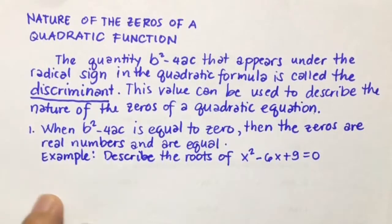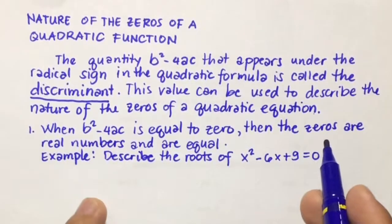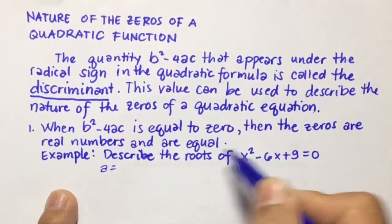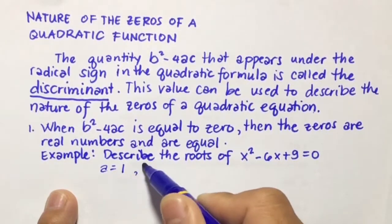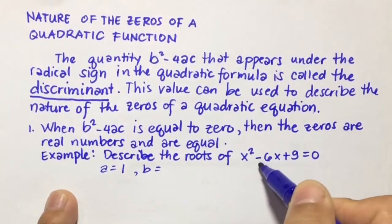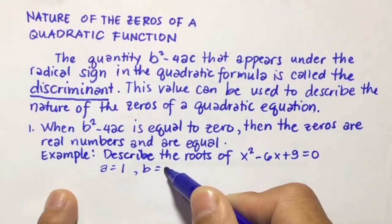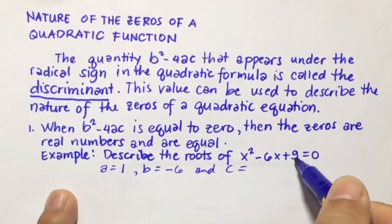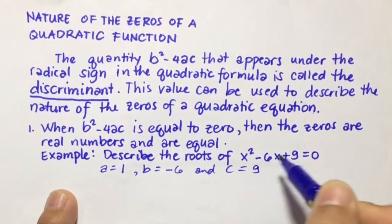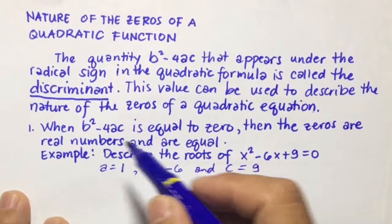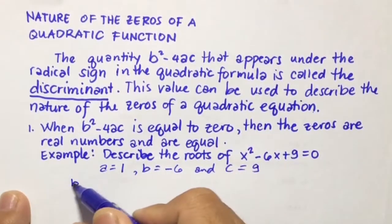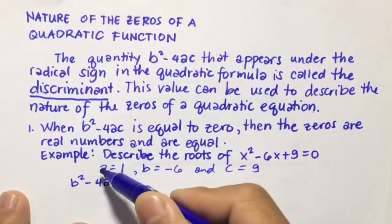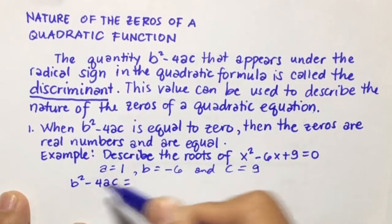We're going to find the values of a, b, and c. So a is equal to 1, b is equal to negative 6, and c is equal to 9. Then using the discriminant b squared minus 4ac, we'll substitute the values of a, b, and c.